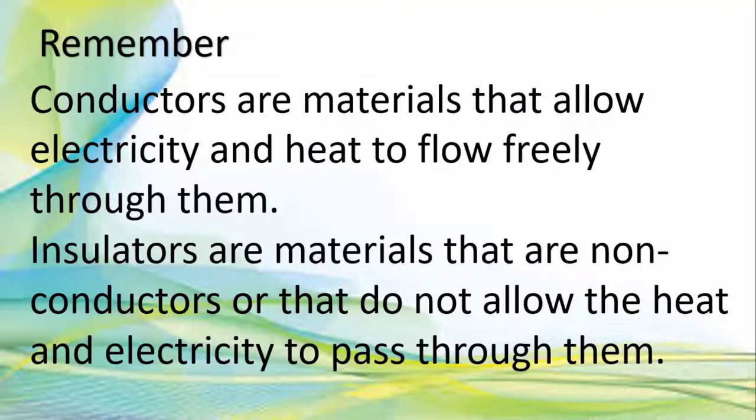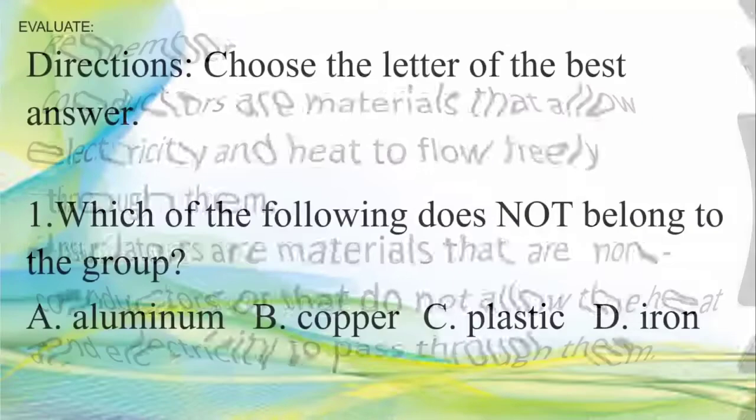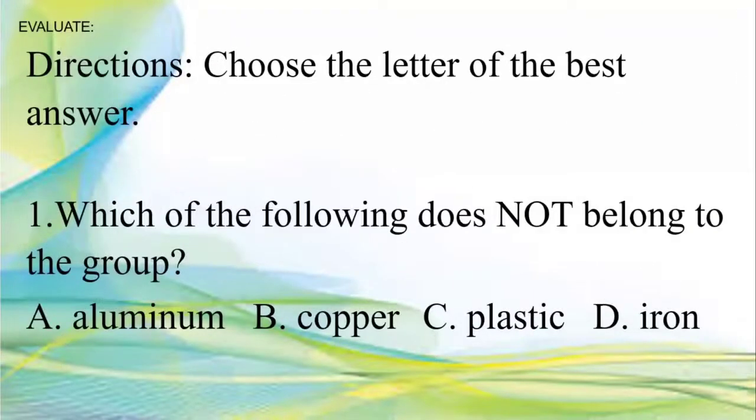Remember, conductors are materials that allow electricity and heat to flow freely through them. Insulators are materials that are non-conductors or that do not allow the heat and electricity to pass through them.